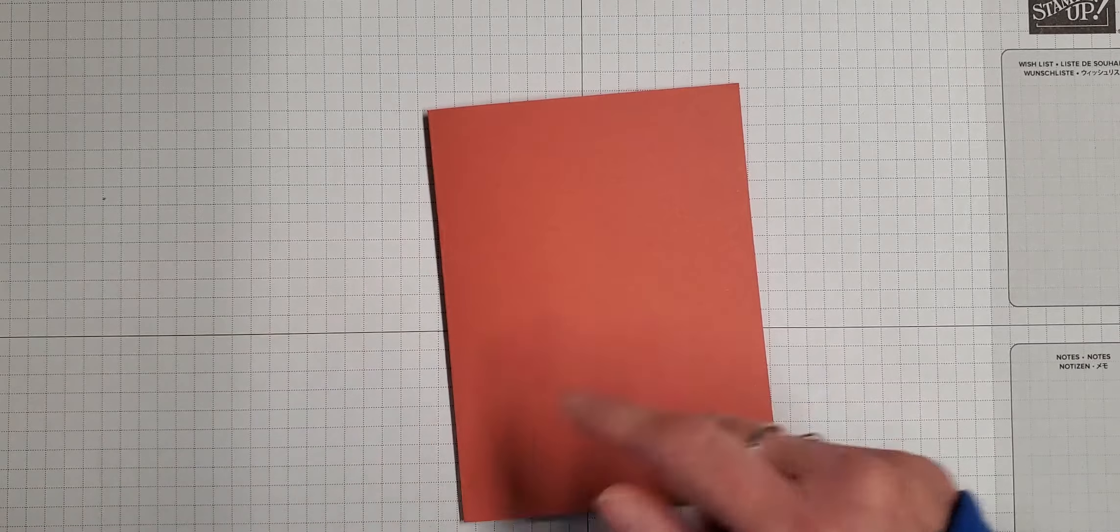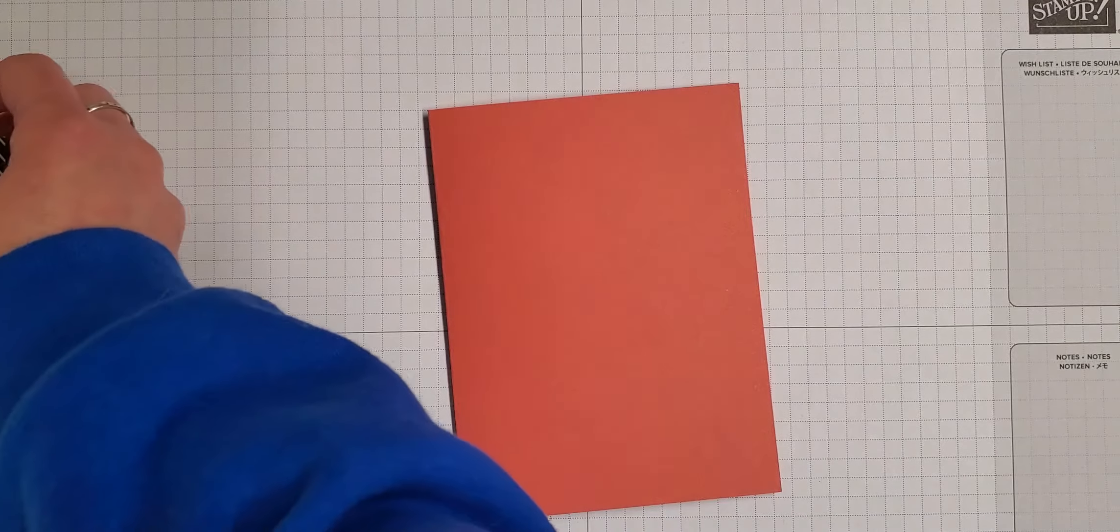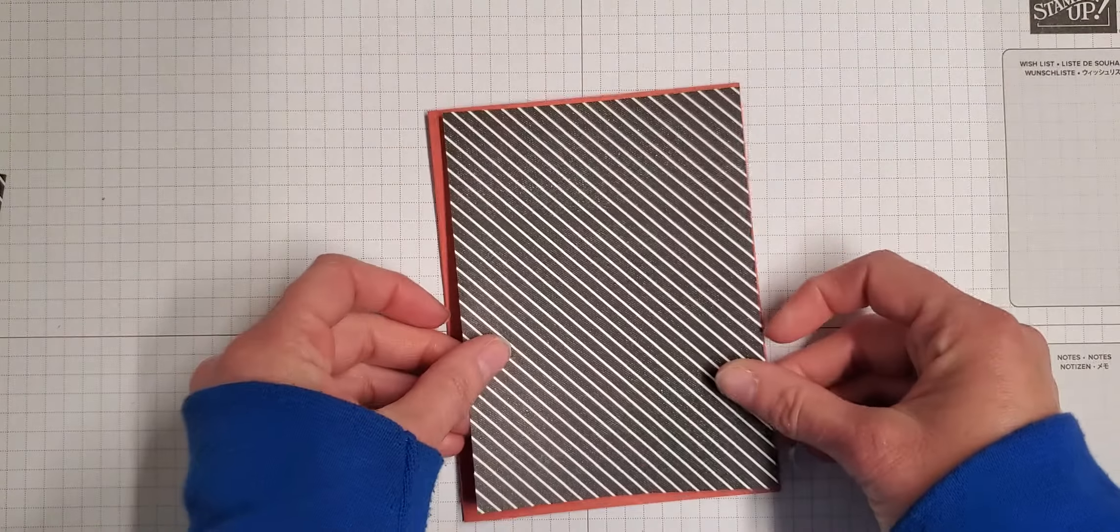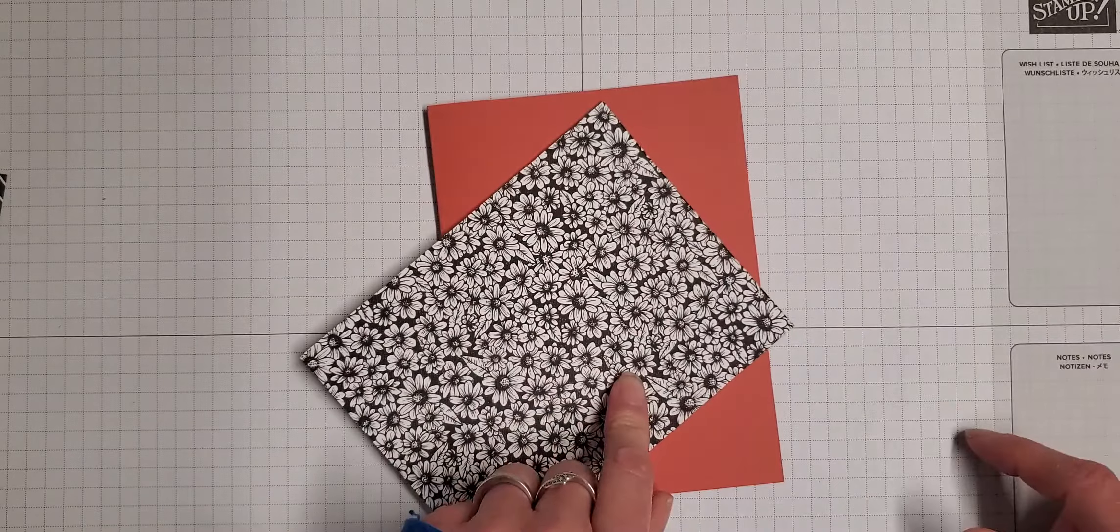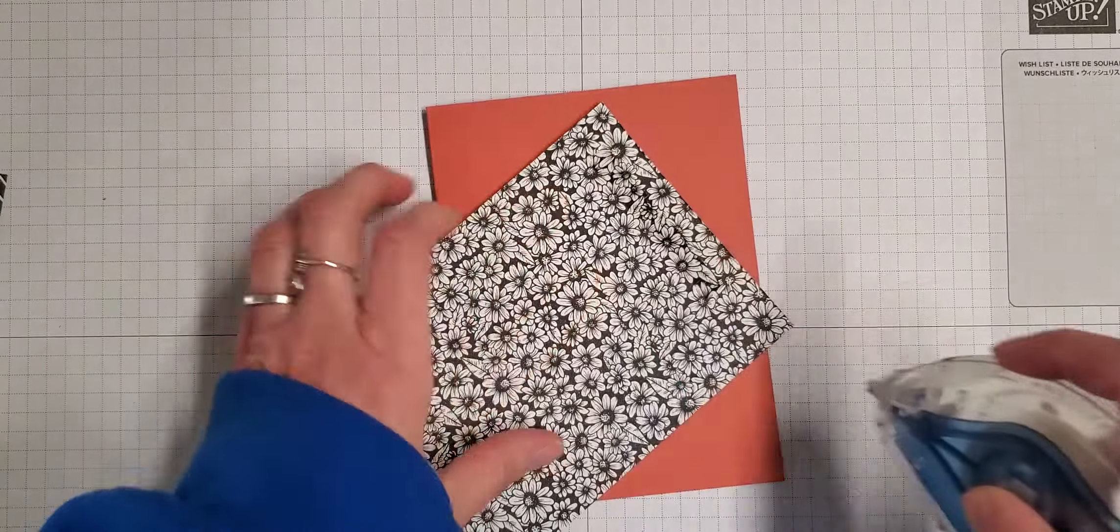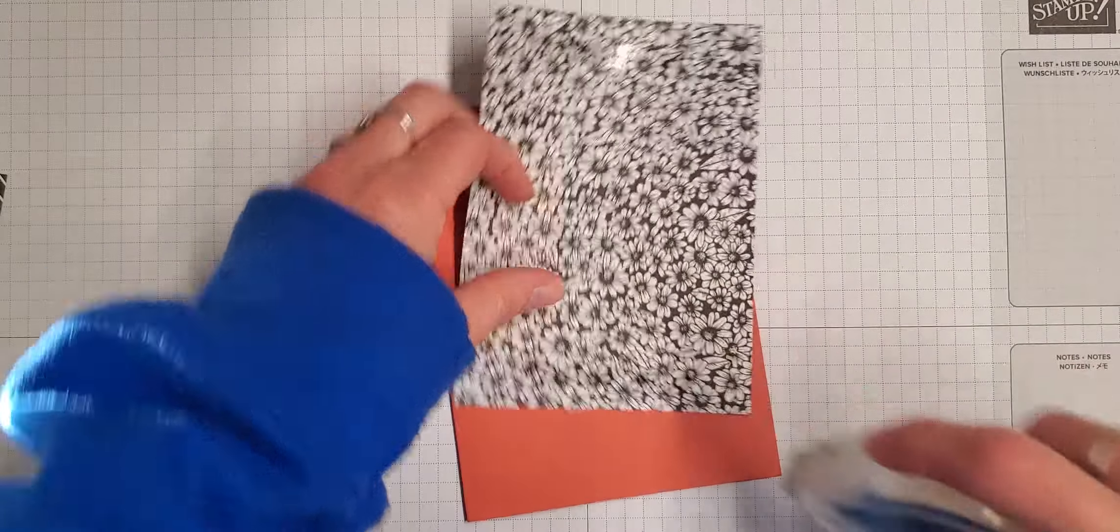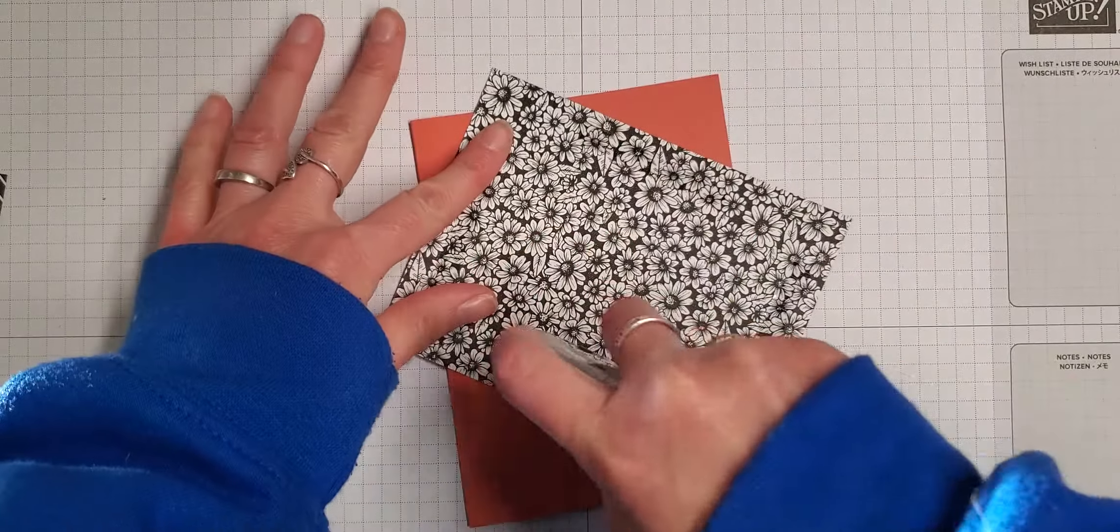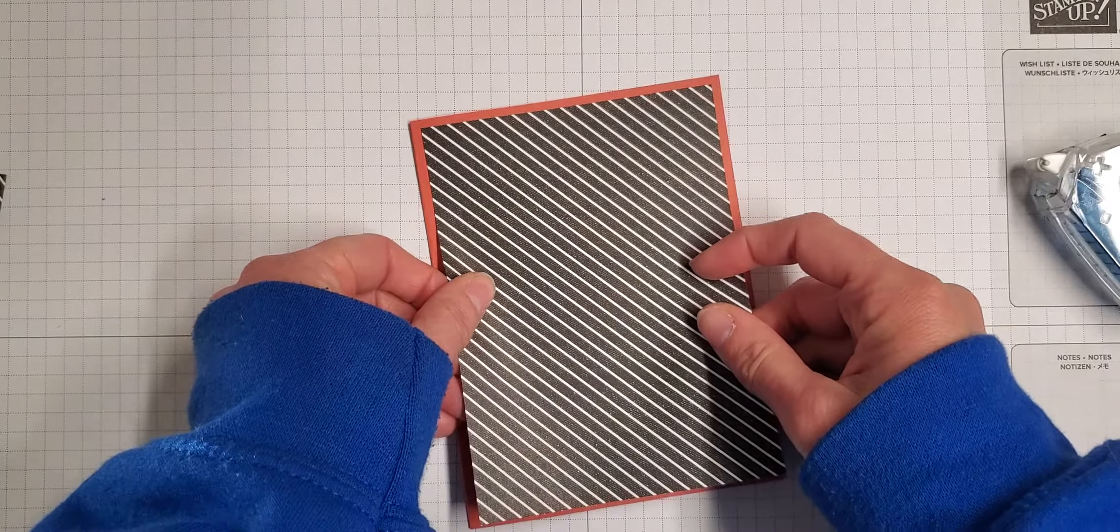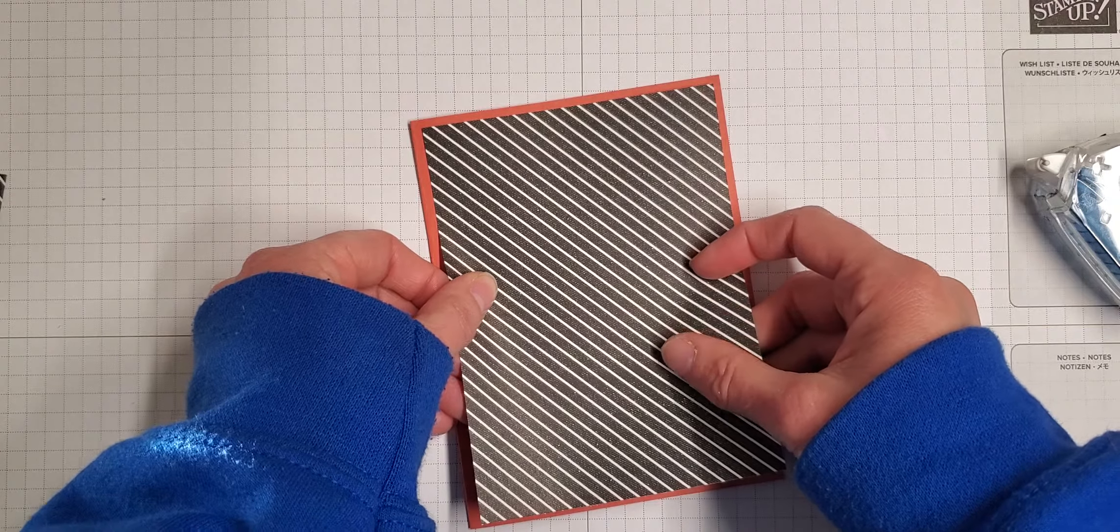Let's go ahead and make some matching cards featuring the other retiring in colors. So this one is Terracotta Tile and I am going to grab a piece of the black and white paper. That's the True Love designer series paper, that's actually in our January through June mini catalog.